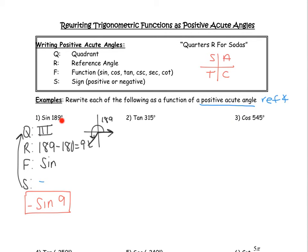We rewrote sine of 189 — still sine, but instead of 189, it's now the positive acute angle 9. Pause the video, put sine of 189 into the calculator and then negative sine of 9. You should get the exact same decimal. The decimal I got was approximately negative 0.1564, showing that you did the right work.